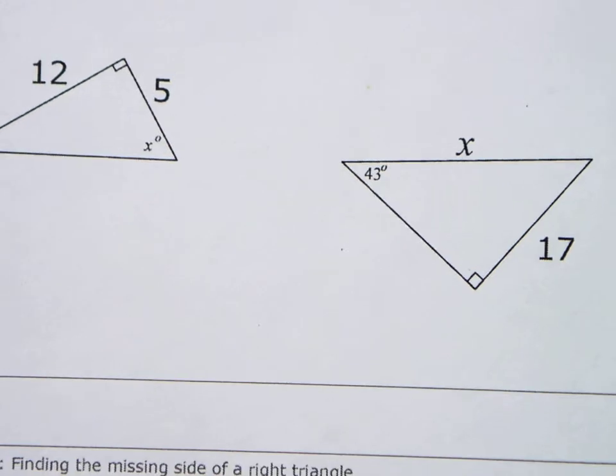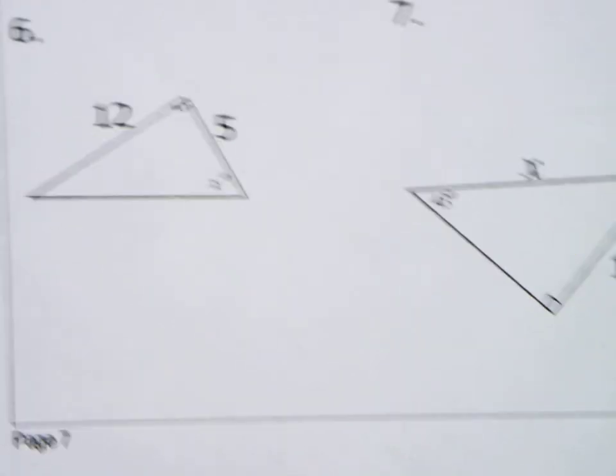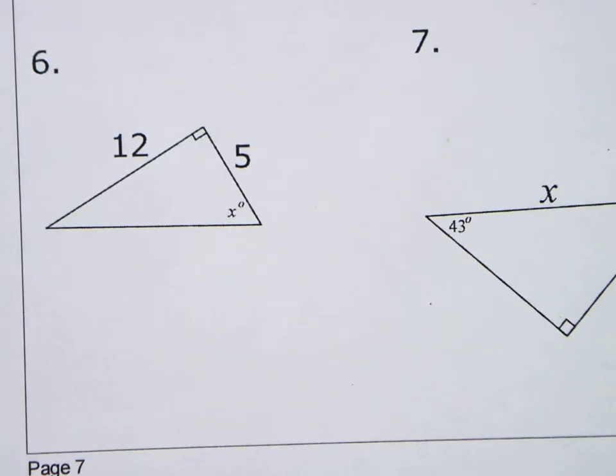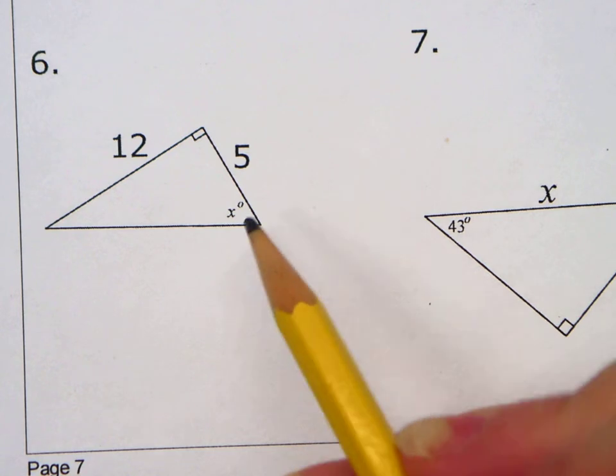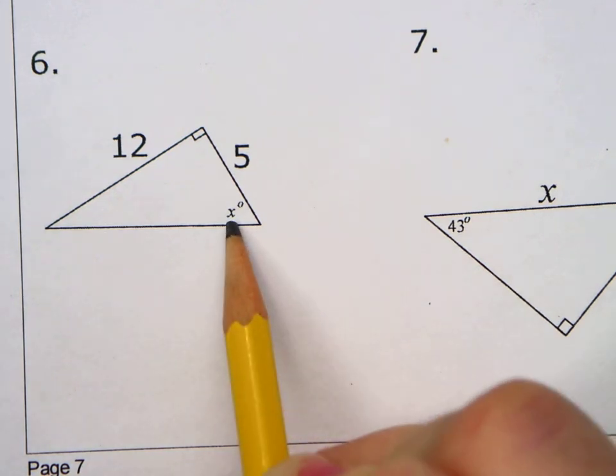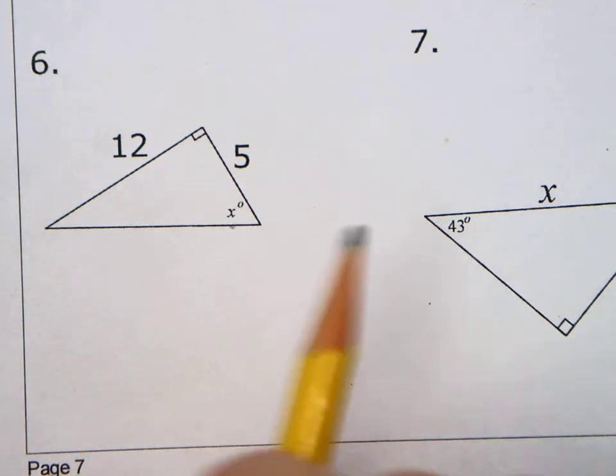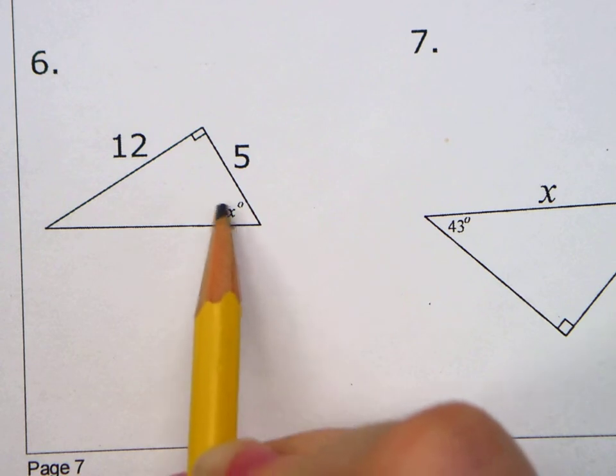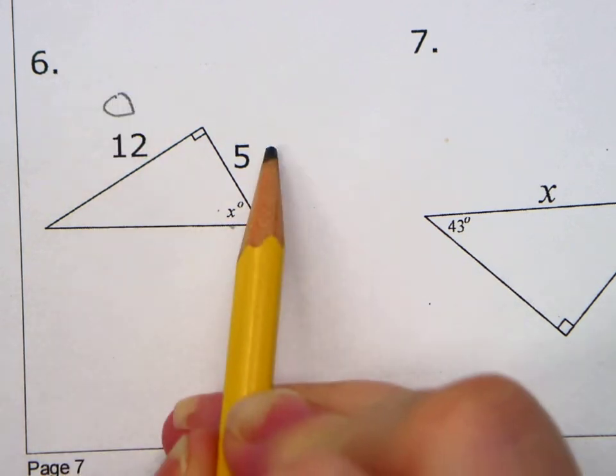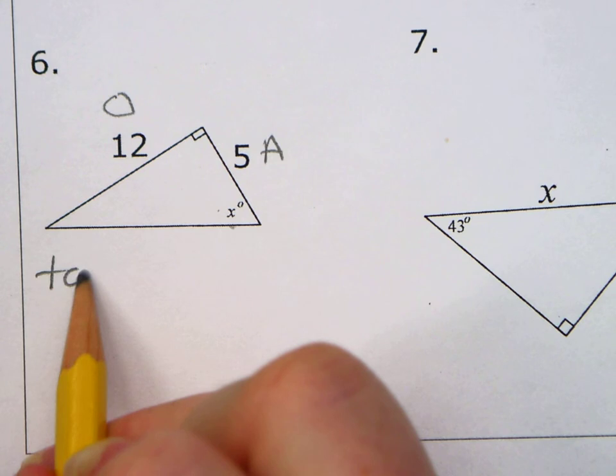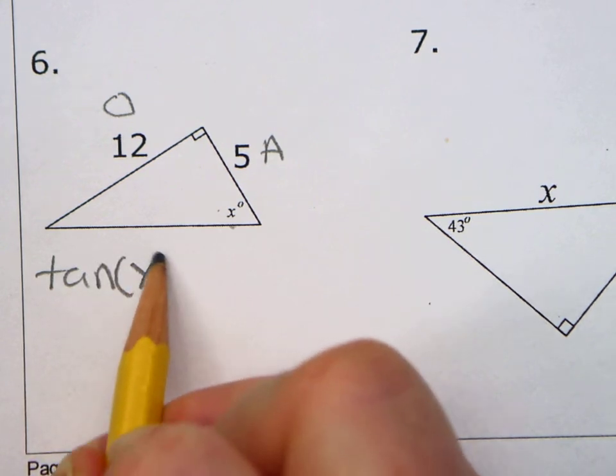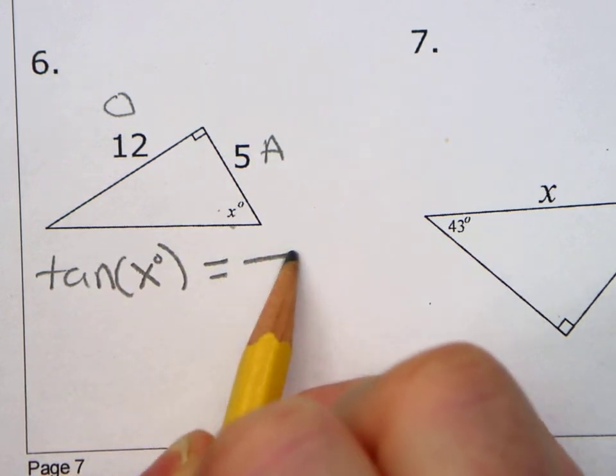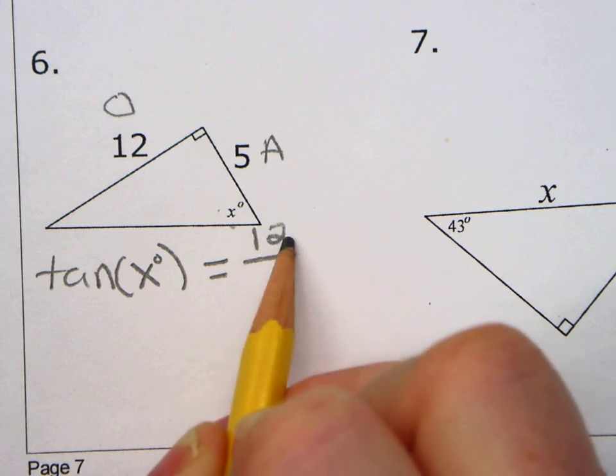All right. Next two. Now in this one, what are we doing in number six? This is one where we're finding the angle. So this is back to what we did the other day, yesterday. We did these already today. So this time, instead of a theta, I put an X in there, right? So which trig ratio do we use? We have our opposite and our adjacent. What is that? That's your tan. Tan of X equals O over A.